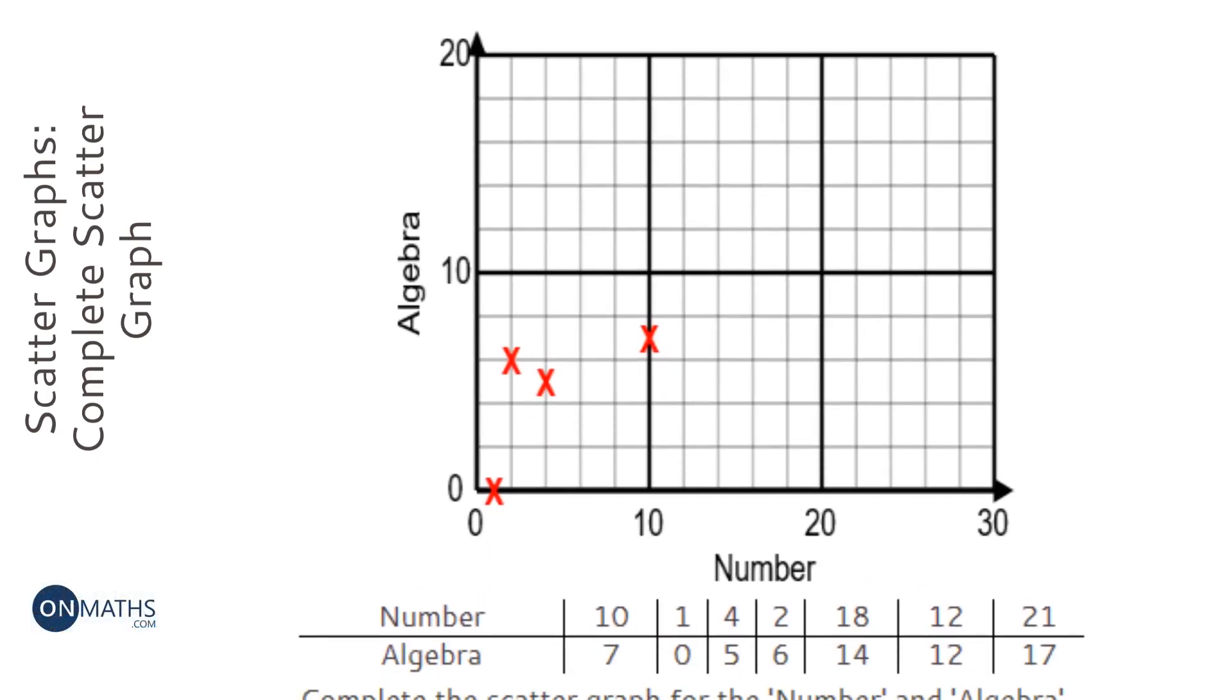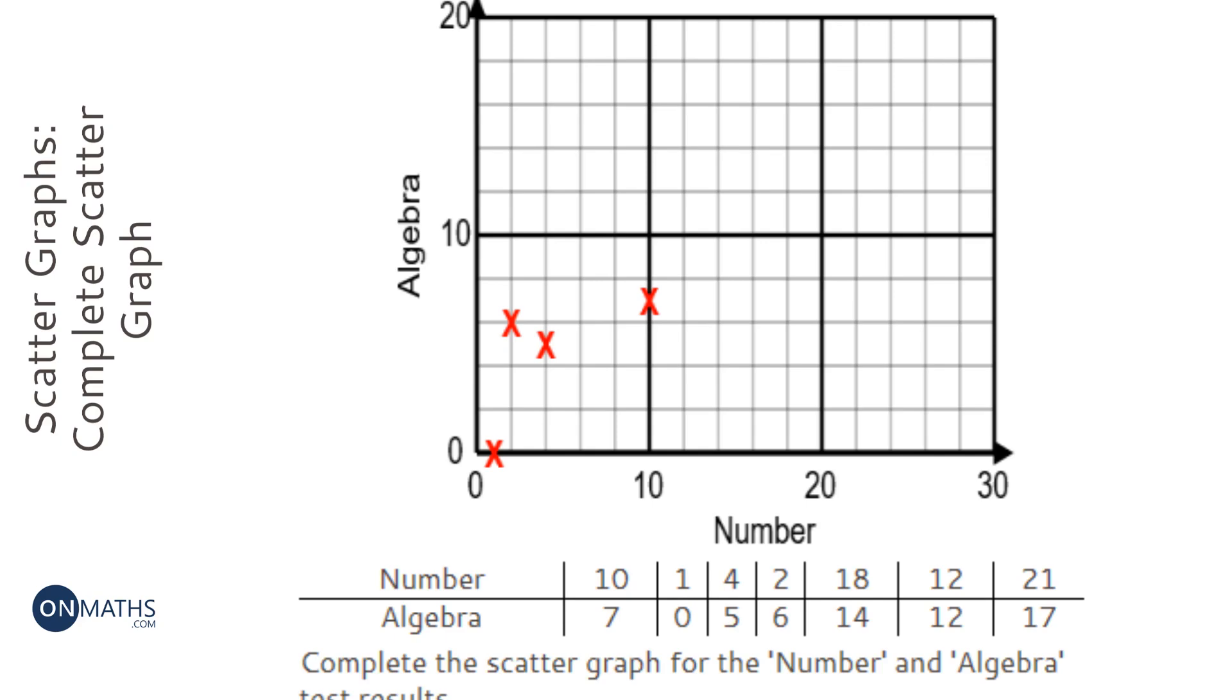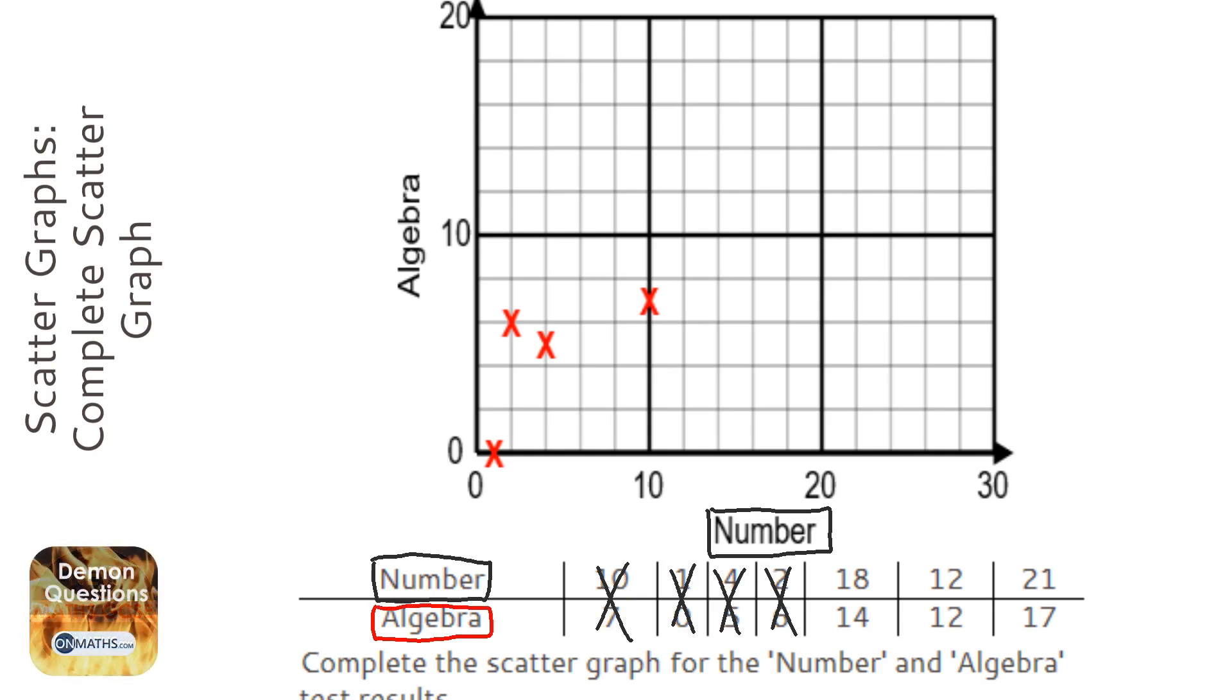It looks like this scatter graph has been partially completed. We can see that these four here have already been plotted, and we need to plot three more. The first thing to check is the labels - Number is the one at the bottom and Algebra is the one up the side, and sometimes they can be switched around. The first one we're looking at is this one.